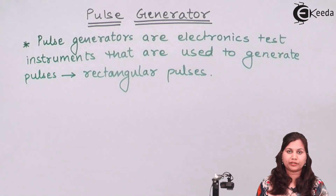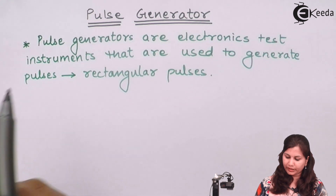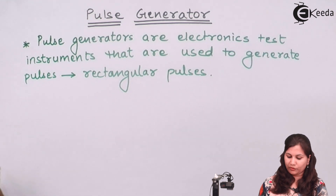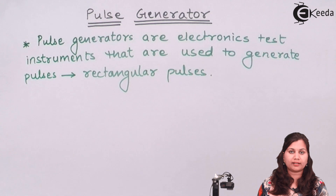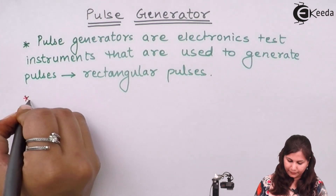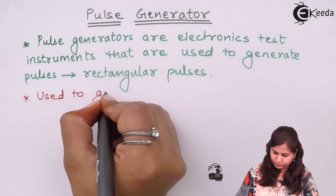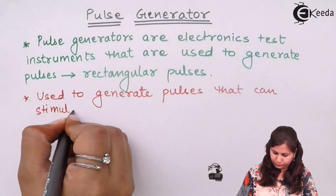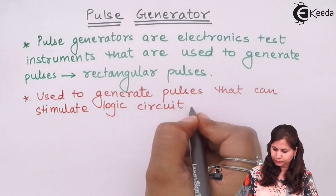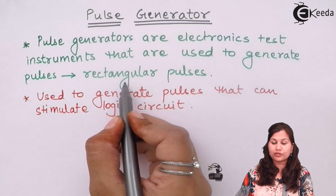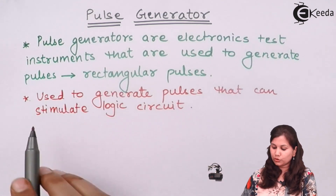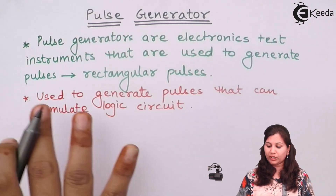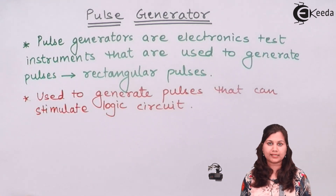The application of the pulse generator is that because they are used to generate the rectangular pulses, they are basically used as test equipment wherever we want to develop and stimulate the logic circuits for various forms. So we can use the pulse generators as the test equipment.